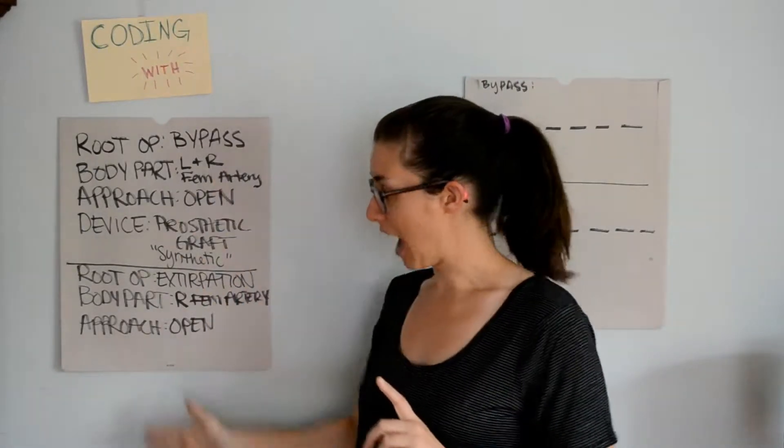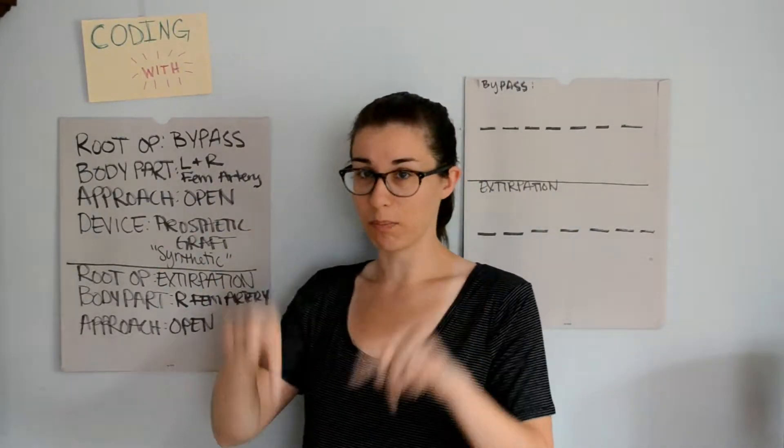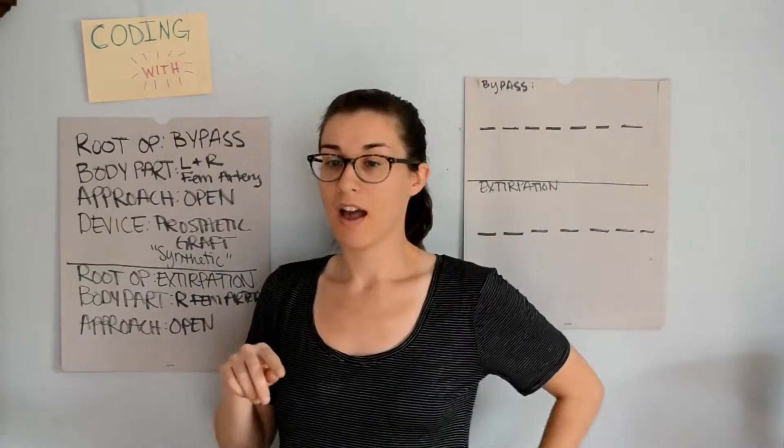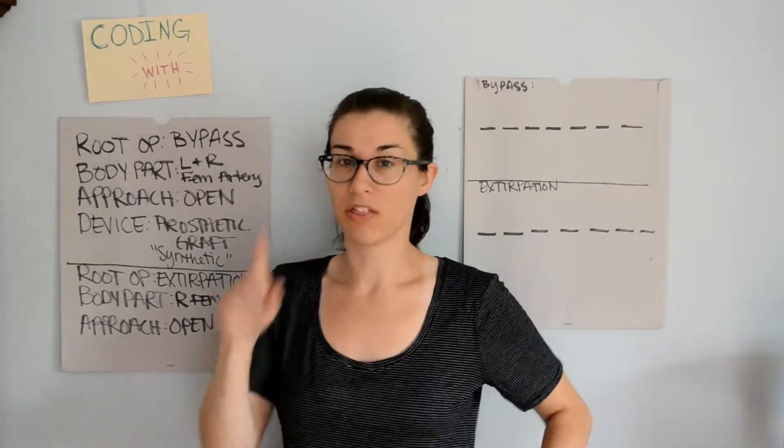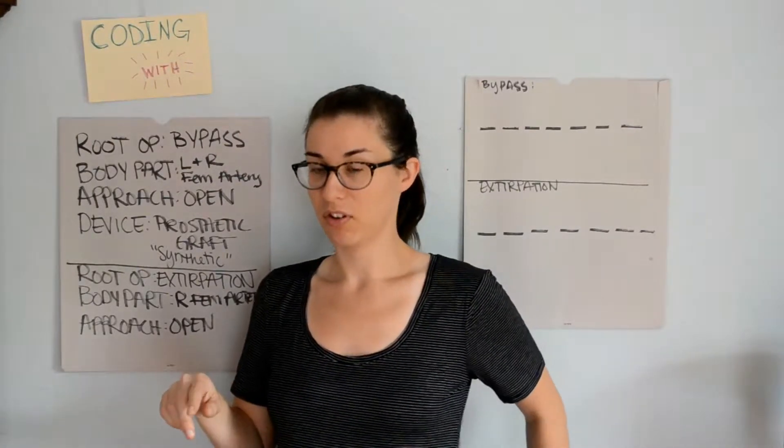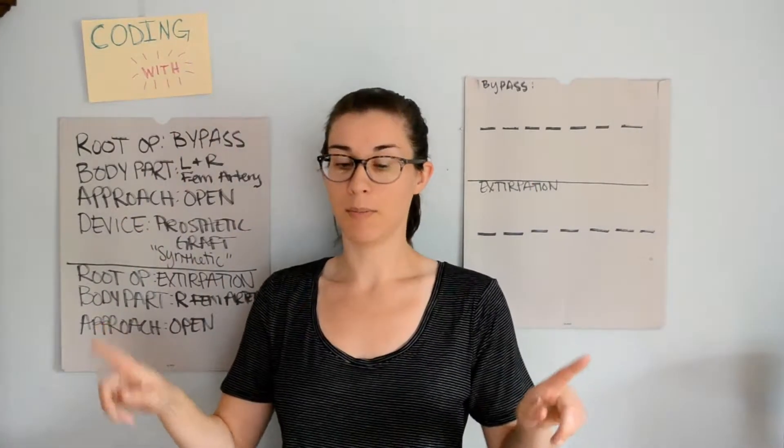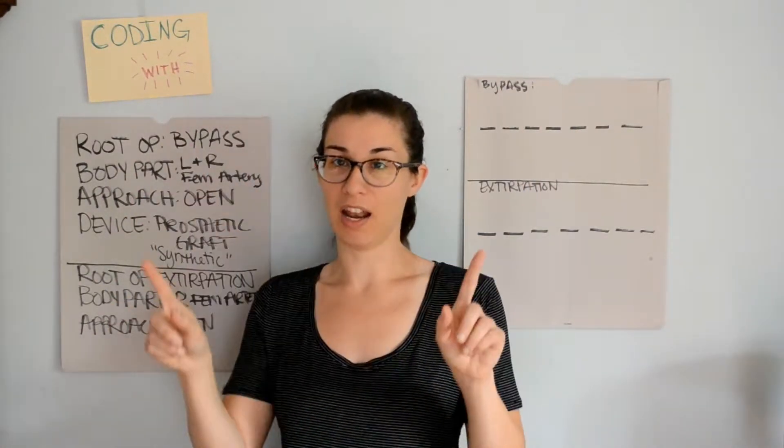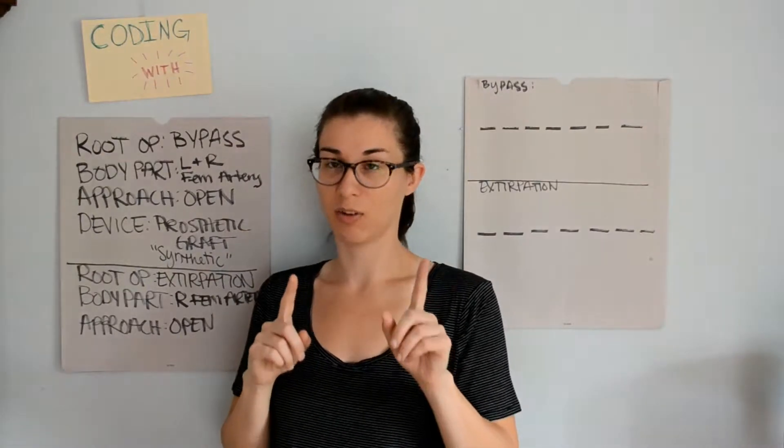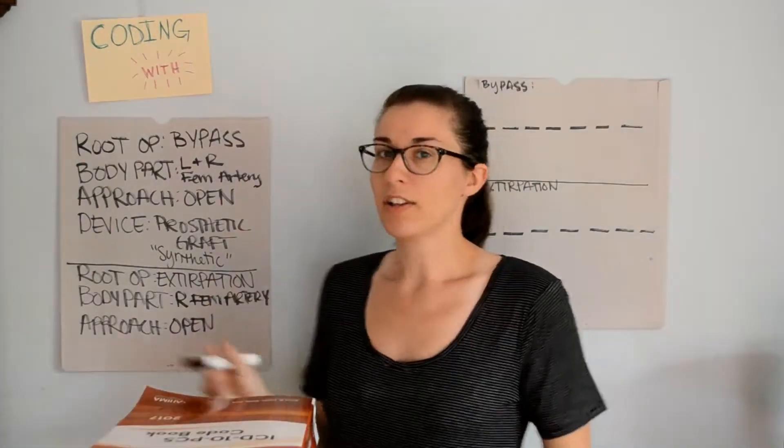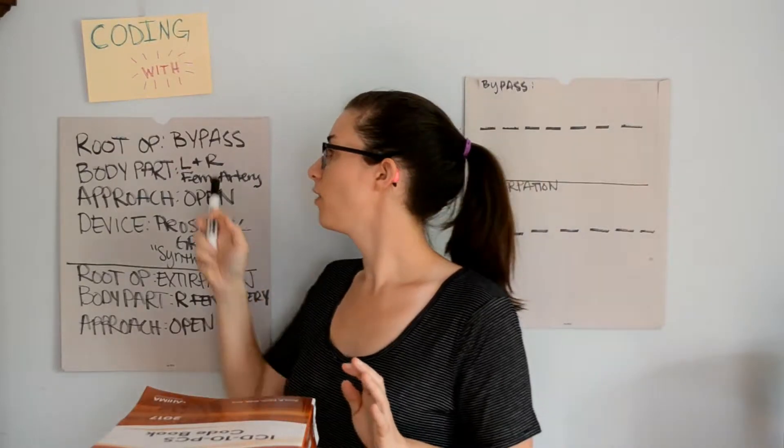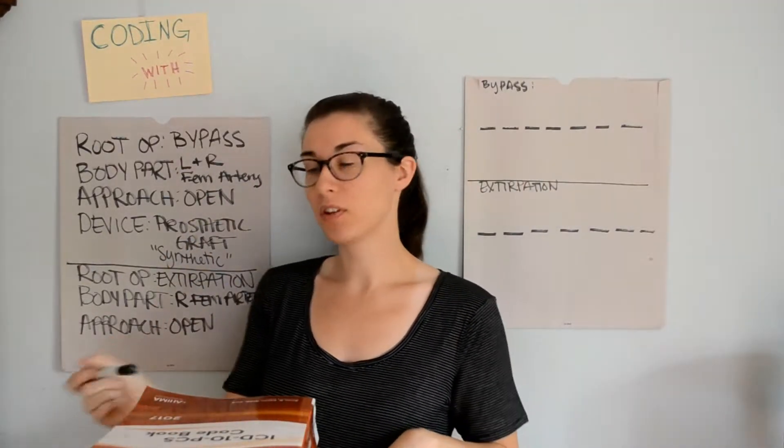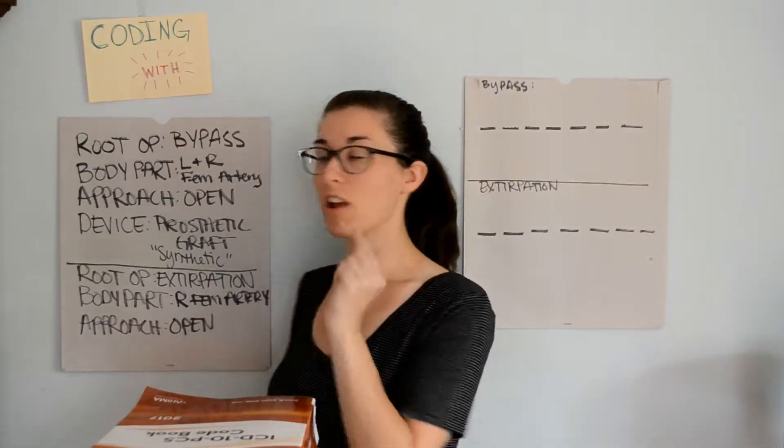So, now that we know that, we can go into the code book and further define and add more information to our codes. I'm going to continue with the format of having the image of the book popping up when we're going to be looking in it. Hopefully, that still works for you all. With this procedure, we know the body parts. We just need to find the body system. If you are uncomfortable yet with the setup of the book, you can go to the index.